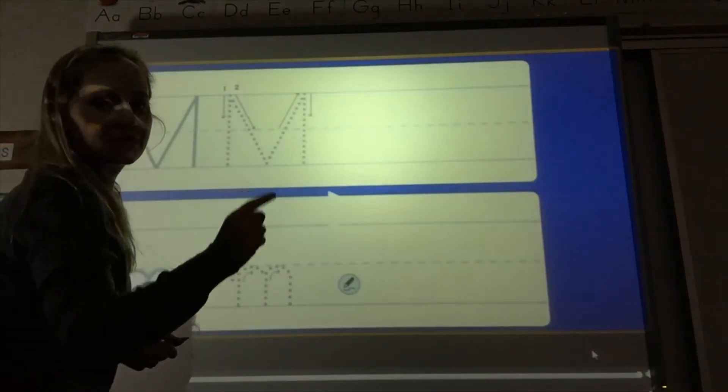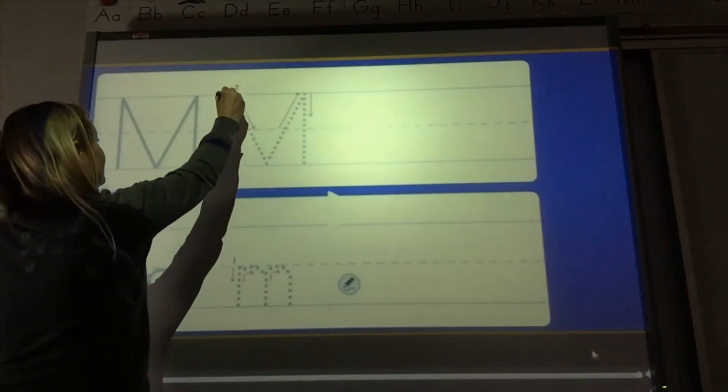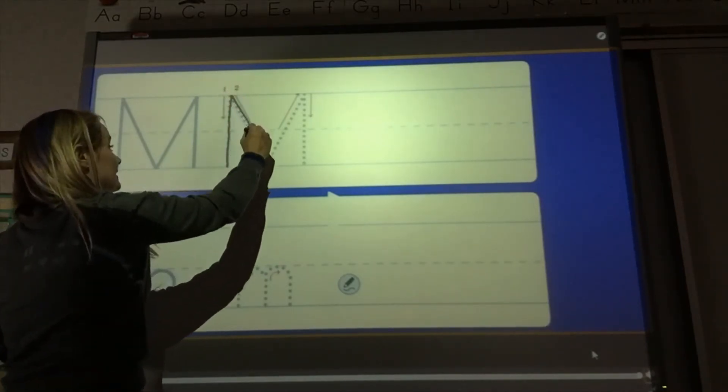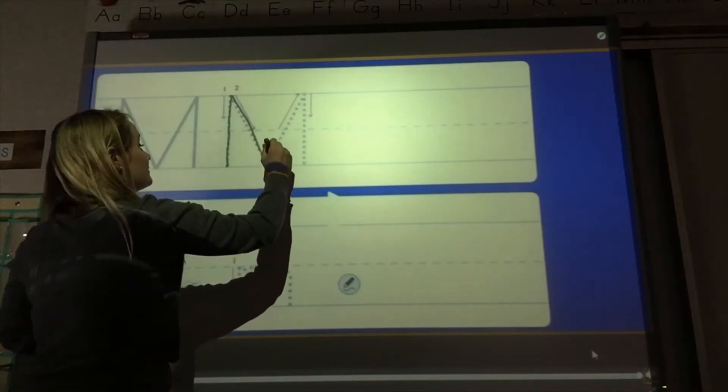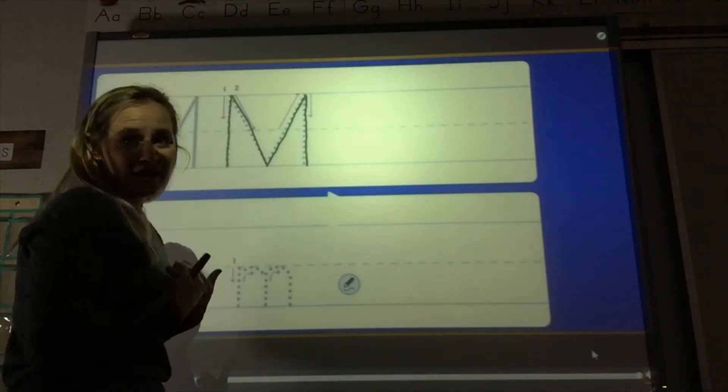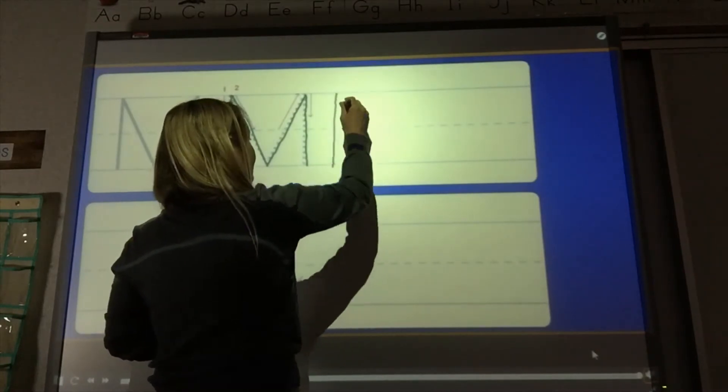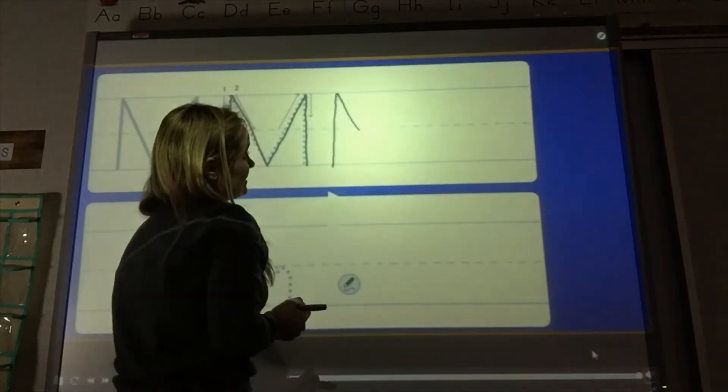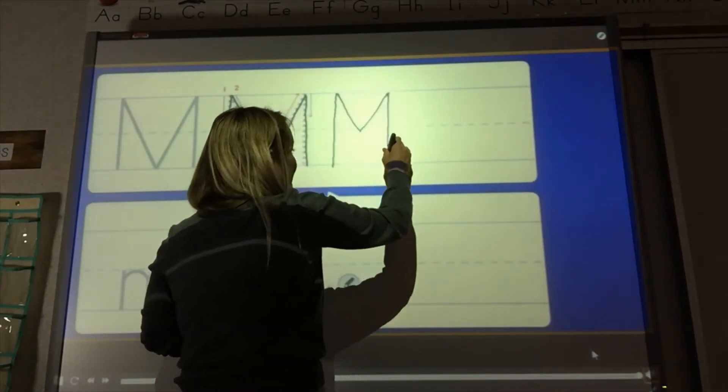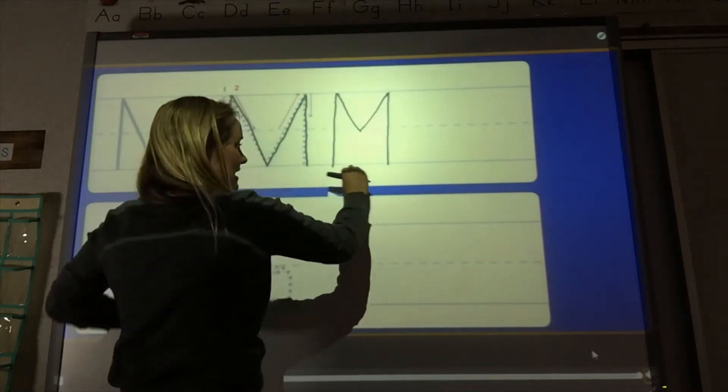All right. Use your pointer finger and trace it with me. Let's start up here. Make a line. Now we make a slanty line. Bring the slanty line back up. And then down again. I personally like to make my M's like this. Line down. I like to stop at the dotted line with my slant. But to make sure it's an uppercase you have to have it fill up this whole space. It has to hit that top line and that bottom line.